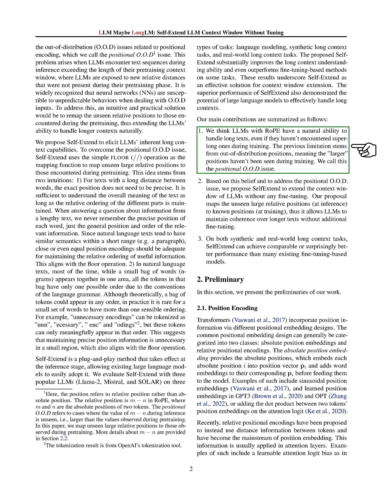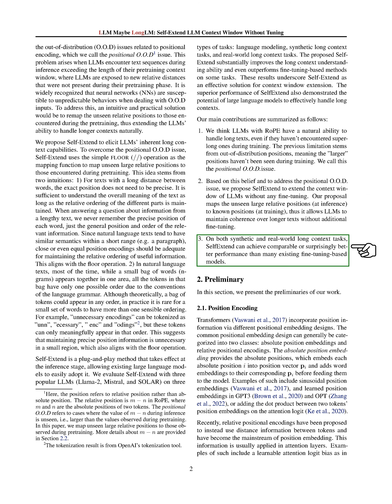In summary, we believe that LLMs with rotary position embedding (RoPE) naturally have the ability to handle long texts, even if they haven't encountered super-long ones during training. The previous limitation comes from out-of-distribution positions — larger positions not seen during training — which we call the positional OOD issue. We propose Self-Extend to extend the context window of LLMs without any fine-tuning, mapping unseen large relative positions at inference to known positions at training, allowing LLMs to maintain coherence over longer texts. On both synthetic and real-world long-context tasks, Self-Extend achieves comparable or even better performance than many existing fine-tuning-based models.